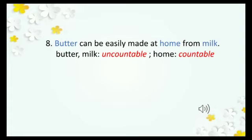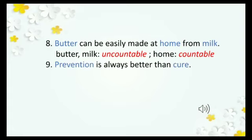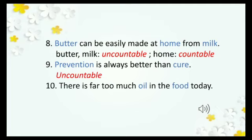Number nine: 'Prevention is always better than cure.' Neither prevention (پرہیز) nor cure (علاج) can be counted, so both are uncountable nouns. Number ten: 'There is far too much oil in the food today.' Oil (تیل) cannot be counted, and food cannot be counted — so both are uncountable nouns in this sentence.